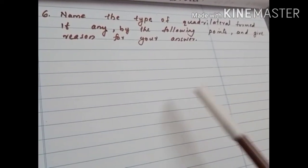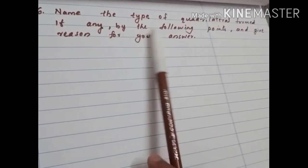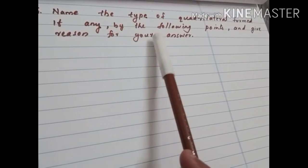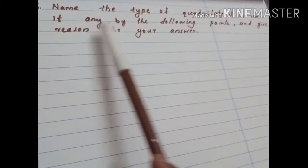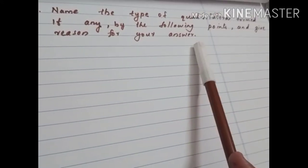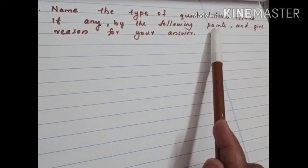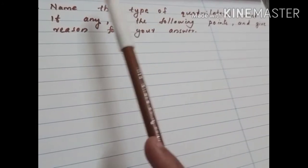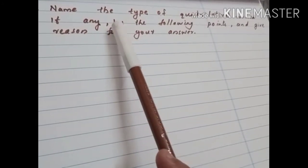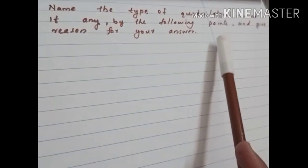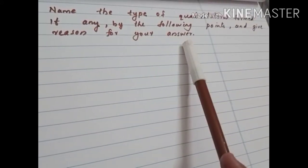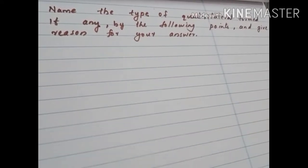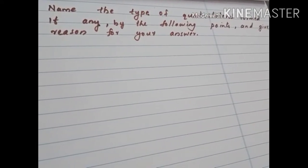Now exercise 7.1, sixth section. Name the type of quadrilateral formed, if any, by the following points and give reason for your answer. That means square, rectangle, rhombus, or parallelogram. There are 3 sub-questions, so first we can discuss the first sub-question.